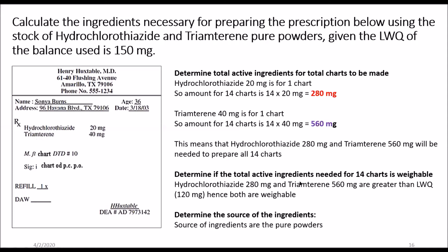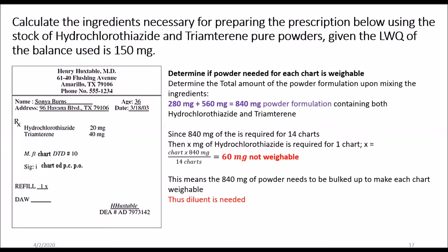We have to determine if the total active ingredients needed for the 14 charts are weighable, because we need to weigh them, mix them together, and then package them into 10 individual wraps. Both are weighable and sourced from pure powders. Upon mixing the 280 milligrams and 560 milligrams together by geometric dilution, we get a total of 840 milligrams of powder formulation.